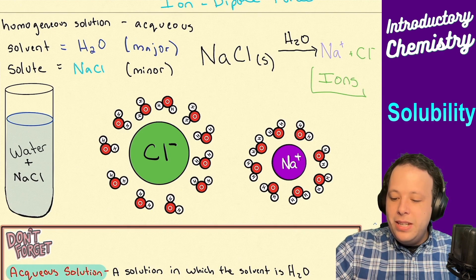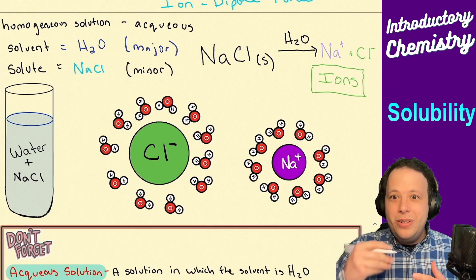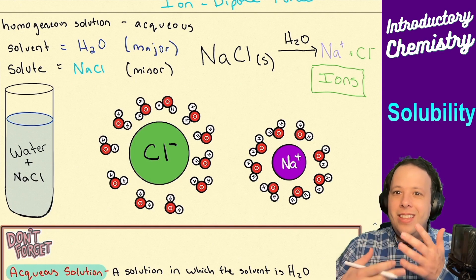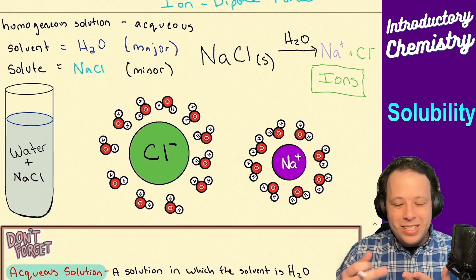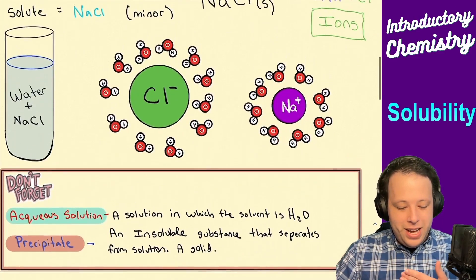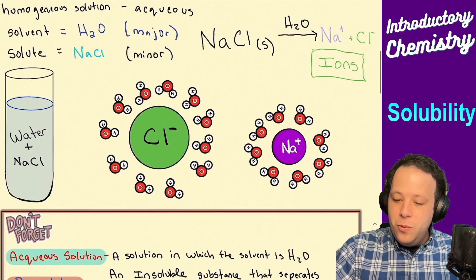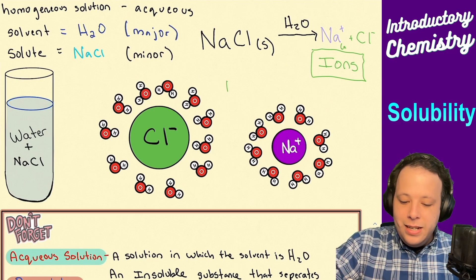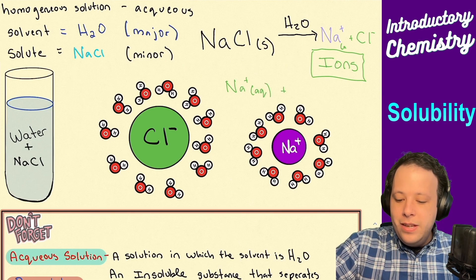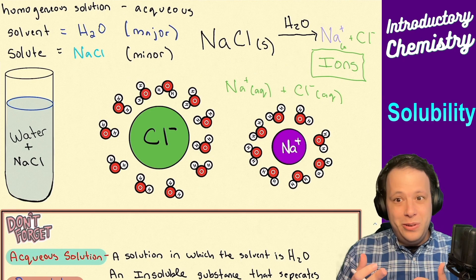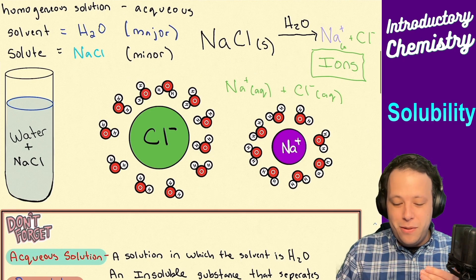Why is that important? When you take multiple solutions and mix them together, that's when certain chemical reactions start occurring. We can have different aqueous solutions — so Na+ becomes Na+(aq) and Cl- becomes Cl-(aq), telling you they're both aqueous within solution. We'll go through a few examples to show what this represents.